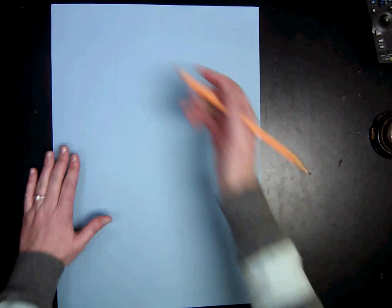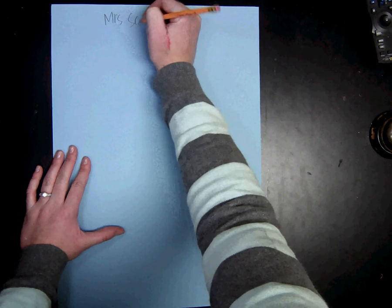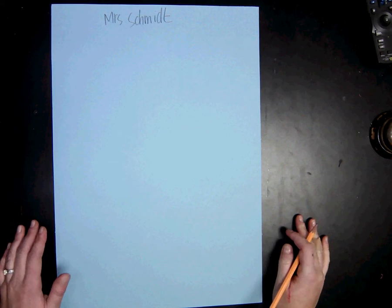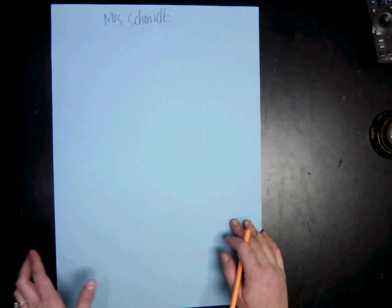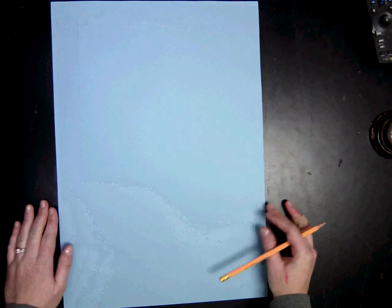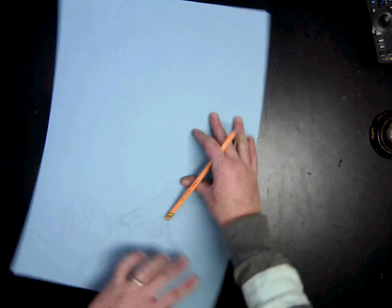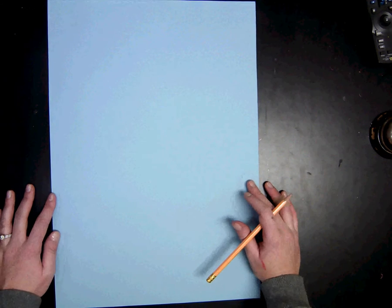Now to start, we are going to write our name at the top, nice and big, on either side so that everyone can read it. Then I want you to flip over your artwork and I want it to be the portrait way, not the landscape way, but the portrait way, the tall way.